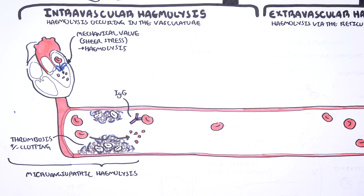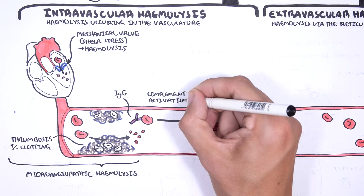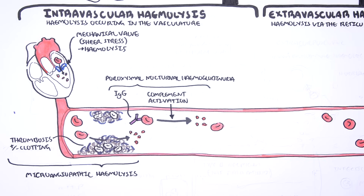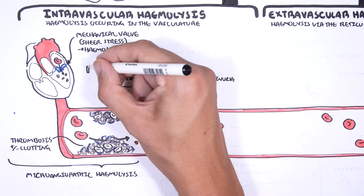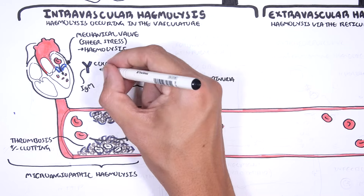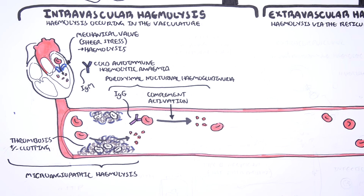There are also immune-mediated causes of intravascular hemolysis, such as paroxysmal cold hemoglobinuria or paroxysmal nocturnal hemoglobinuria, both of which result in red blood cell destruction through complement activation. Cold immune hemolytic anemia is another immune-mediated form, where antibodies recognize antigens on red blood cells at temperatures below normal core body temperature, inducing red blood cell destruction. Cold immune hemolytic anemia is typically extravascular due to IgM, but variants can cause intravascular hemolysis.